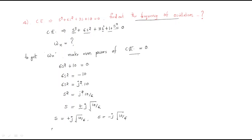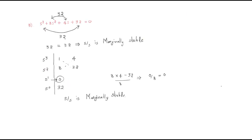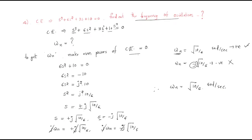Since s = jωn, we have jωn = +j√(10/6) and jωn = −j√(10/6). Cancelling j on both sides gives ωn = √(10/6) or ωn = −√(10/6). Since frequency in radians per second is always positive, the negative value is not considered. Therefore, the natural frequency ωn = √(10/6) radians per second.